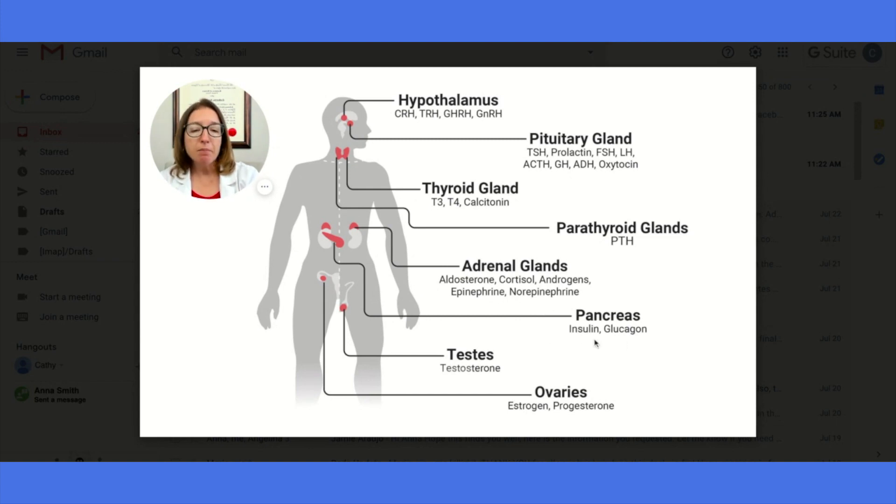Then we have the pancreas, which is situated behind the stomach. The pancreas produces insulin and glucagon. The testes is another endocrine gland. It produces testosterone, and then the ovaries produce estrogen and progesterone.